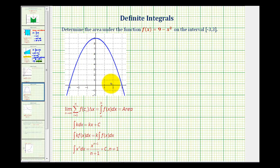Notice that negative three and three are the x-intercepts of the function, so we're trying to determine the area of the shaded region here.